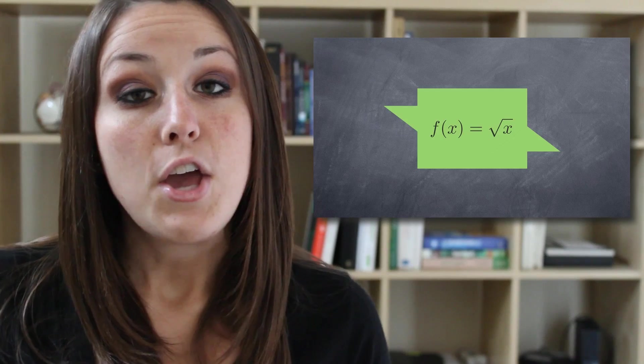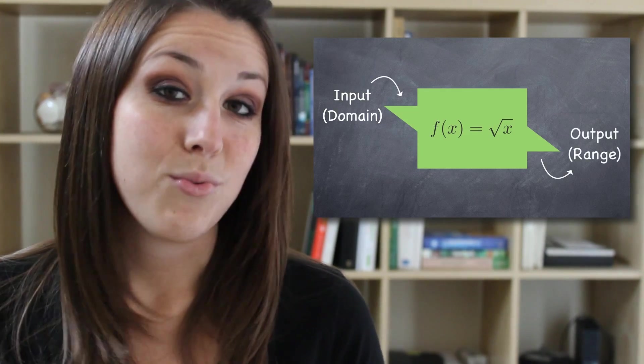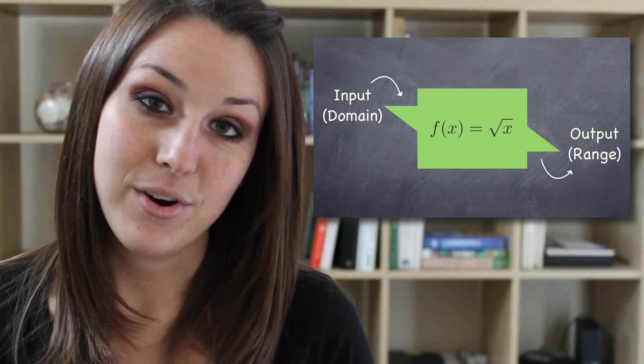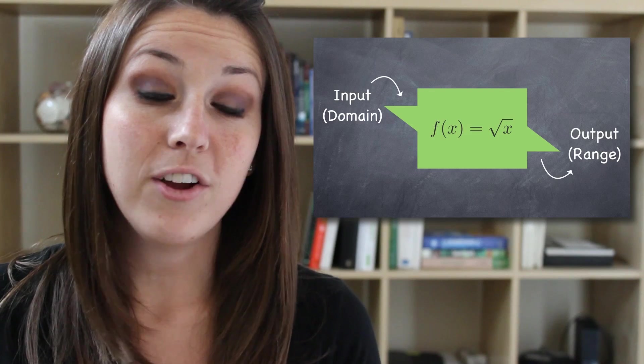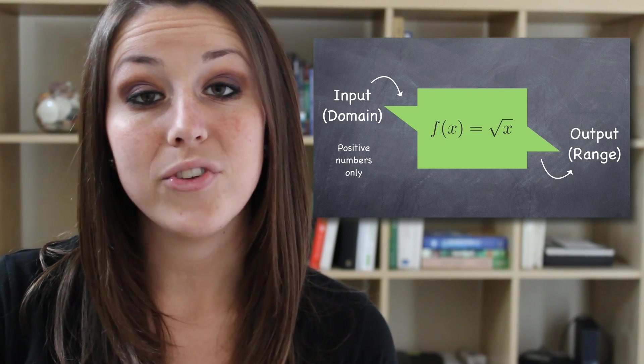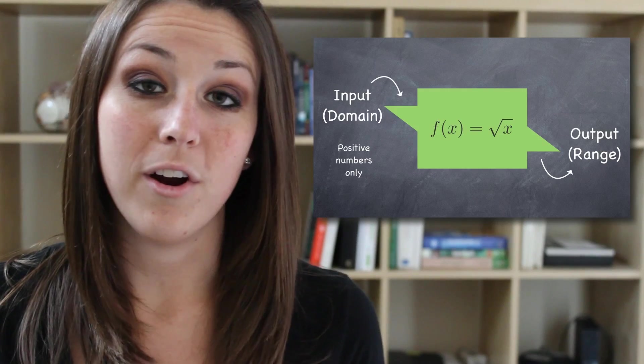You can think of the domain of a function as the set of all possible input values. Depending on the function, some values will be impossible to input. For example, you'll remember from previous math courses that, at least with real numbers, you can't take the square root of a negative number. So if you have a square root sign in your function, you won't be able to input any value that will make the value underneath your square root sign negative. These inputs just won't work. You can't put them into your function, so they're not in the domain of your function.